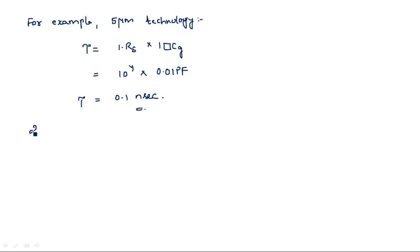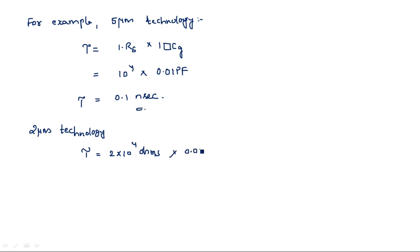For 2 micrometer technology, tau equals 2 × 10^4 ohms into 0.0032 picofarads, which equals 0.064 nanoseconds. This is the time delay at 2 micrometer technology.